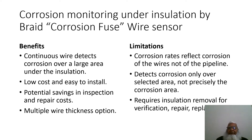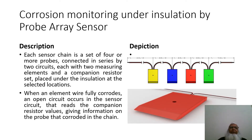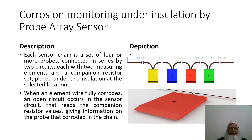The next technique is monitoring corrosion under insulation by probe array sensor. A sensor chain is a set of four or more probes connected in series by two circuits, each with two sensing elements and a companion resistor, placed under the insulation at selected locations, as shown in the photo. When an element wire fully corrodes, an open circuit occurs in the sensor circuit, and the companion resistor value gives information on which probe in the chain has corroded.